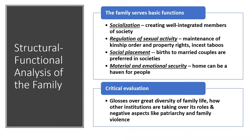Families also regulate sexual activity, especially once you start looking at kinship order and property. Different societies have different rules — some are polygamous. But in general, a family tells you where the property lines are drawn. This family owns this piece of land and this business. When a man of this family marries a female, she's only supposed to have sex with him so that legitimate children can inherit that business, land, and property rights. Maintenance of kinship order is very important in pastoral and above societies, less so in hunter-gatherer societies.